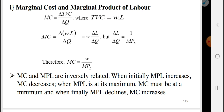Marginal cost is change in total variable cost over change in quantity. The total variable cost is wage times labor. So marginal cost equals change in wage times labor over change in quantity. Since wage is constant, we need to change labor and figure it out.